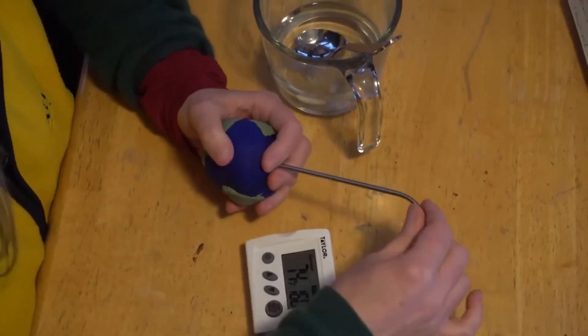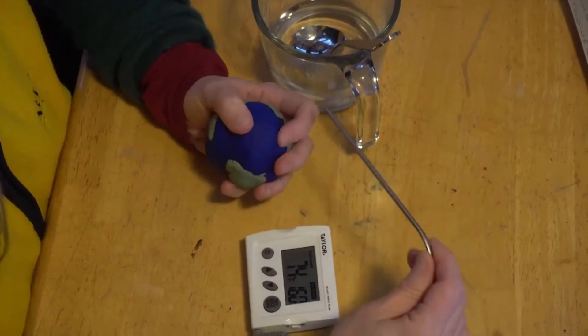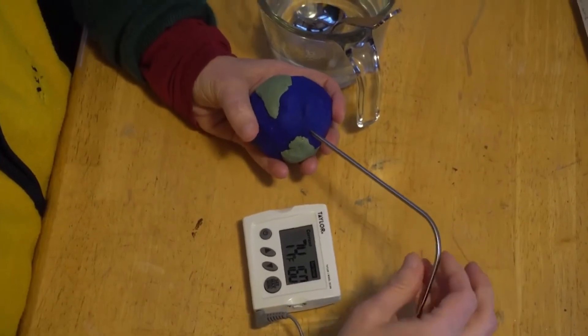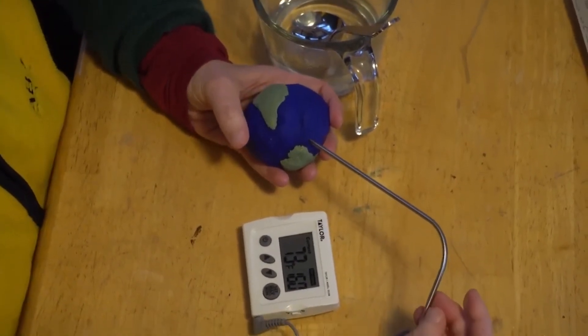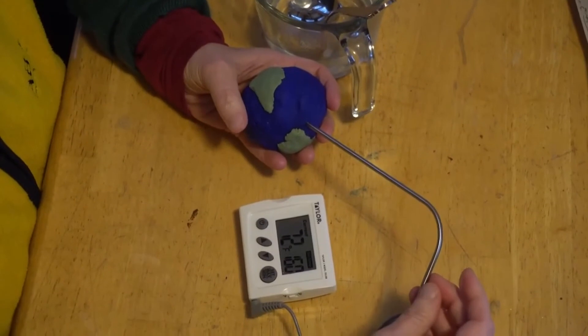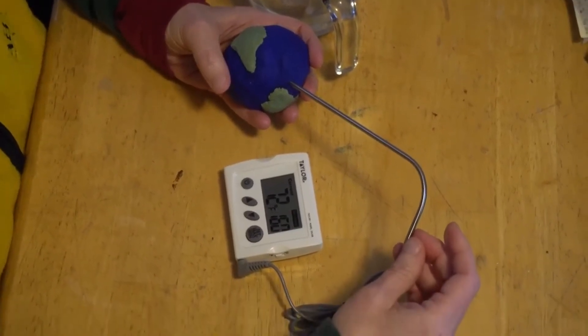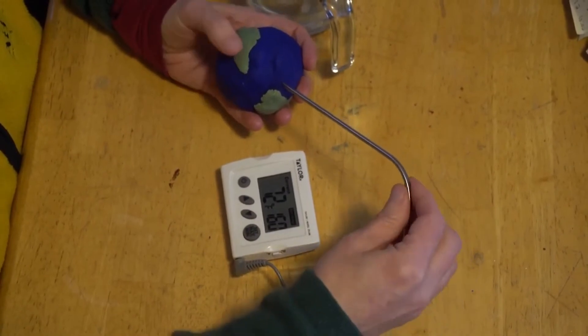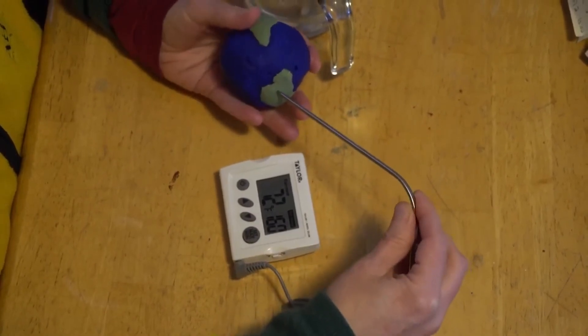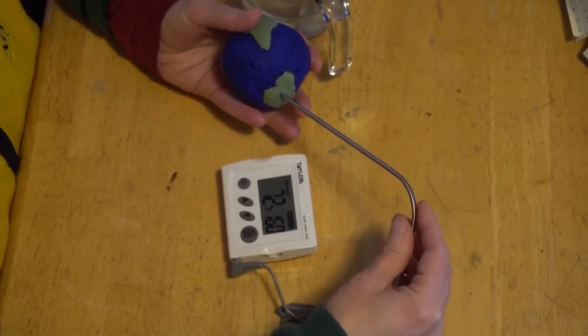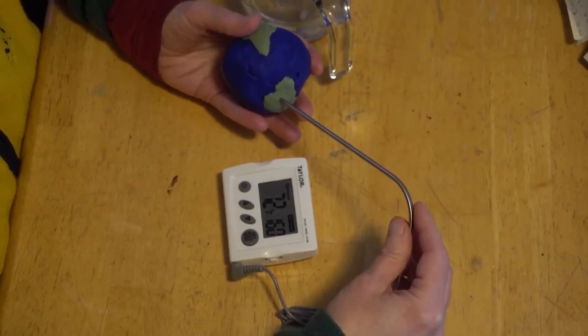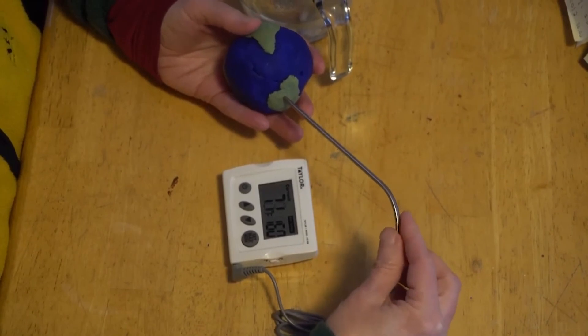At the center of the Earth we had 77 degrees. And then out here, we are going to put just into the tip of the ocean, and we are going to see what temperature we get out here, 72 degrees. And then out here in our continent area, we have colder temperature similar to the ocean, 72, 71.